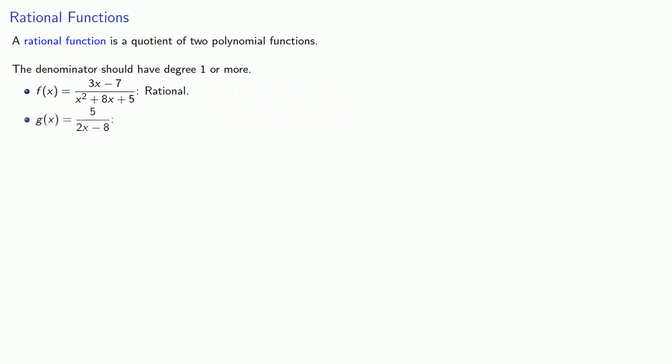g(x) = 5/(2x - 8). Well, 5 is a polynomial of degree 0, and 2x - 8 is a first degree polynomial. So this is a rational function.